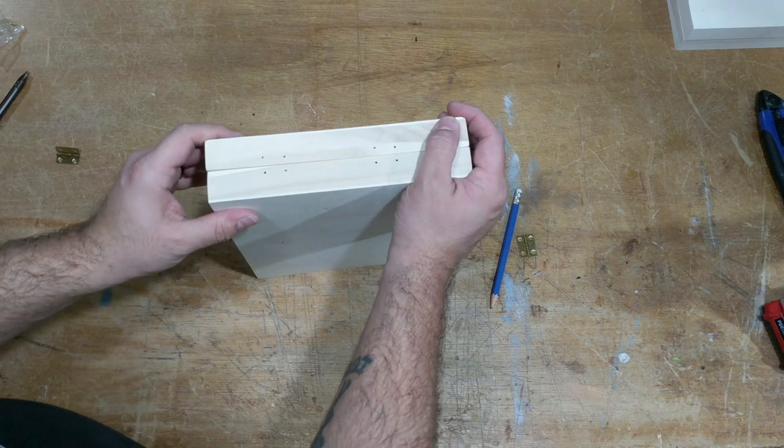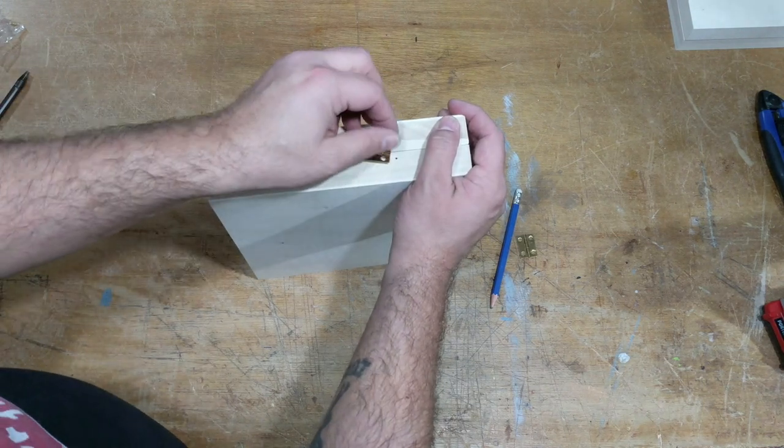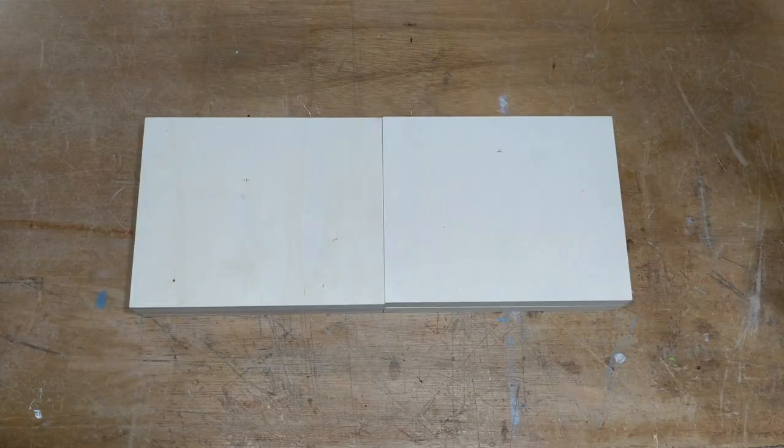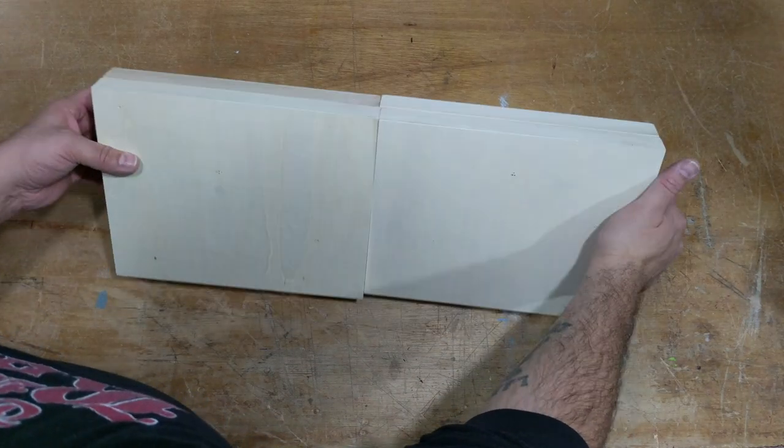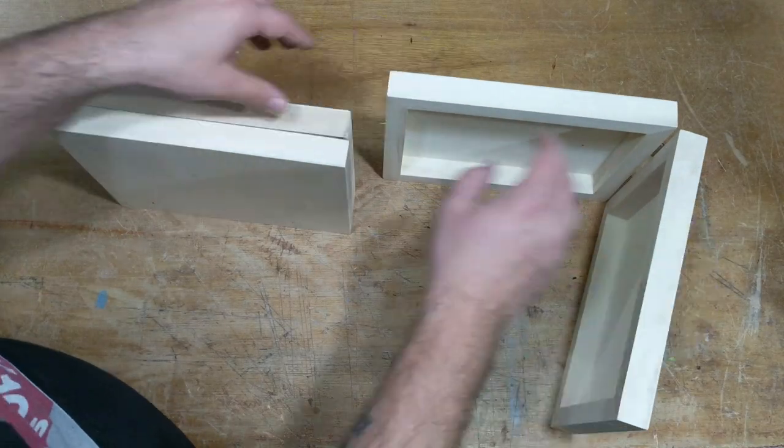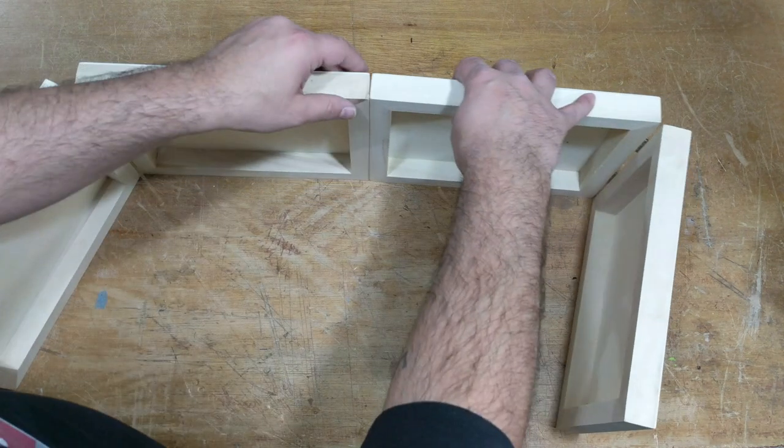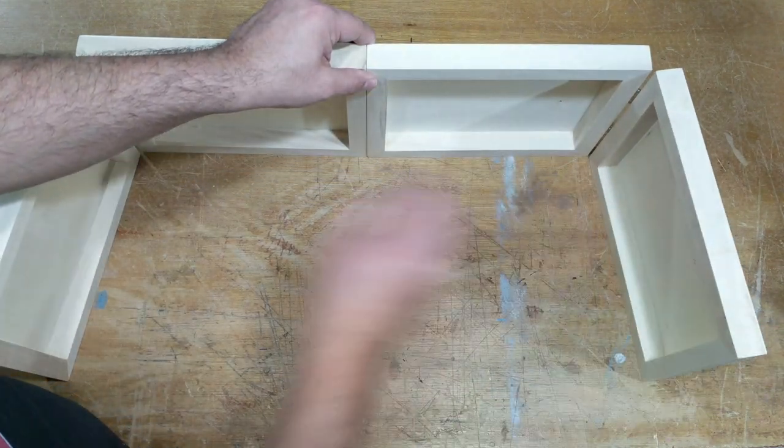Okay, now that I've got those drilled, I'm going to go ahead and start placing my hinges. Okay, I have my two side walls done. Now I need to connect this in the middle here.